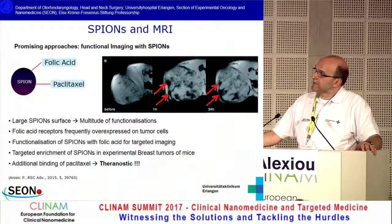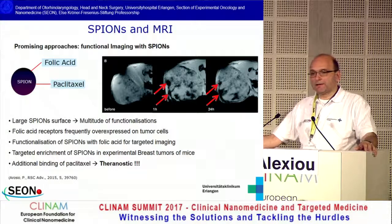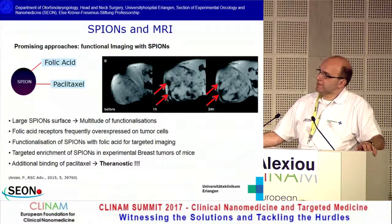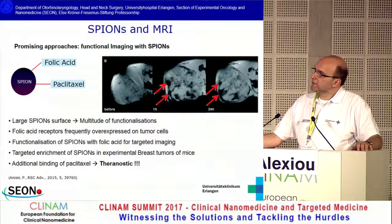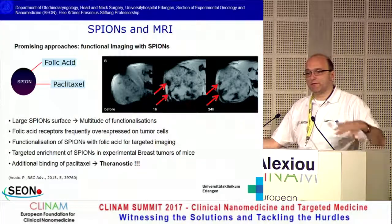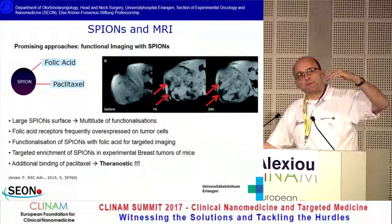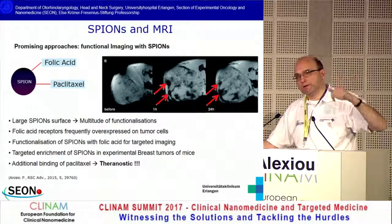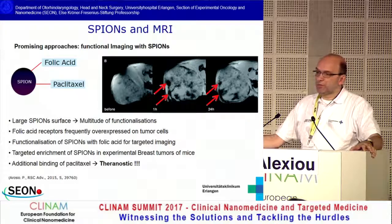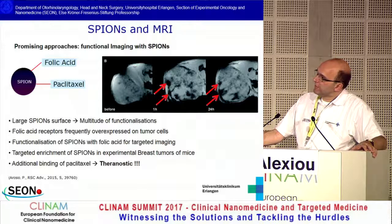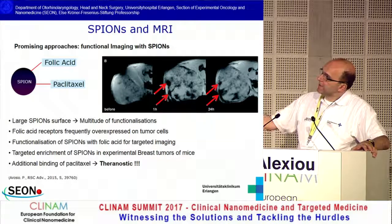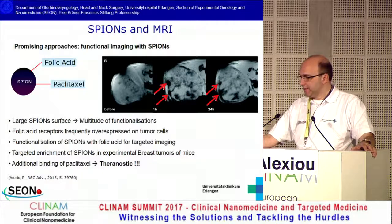The other part is theranostics. You can do both: bind to these particles folic acid, which is expressed in many tumor cells, and also add a therapeutic agent like paclitaxel. After injection, you have both the imaging contrast via the SPIONs and the therapeutic application. In animals with breast tumors, the particles accumulate along with paclitaxel in the respective tumor.